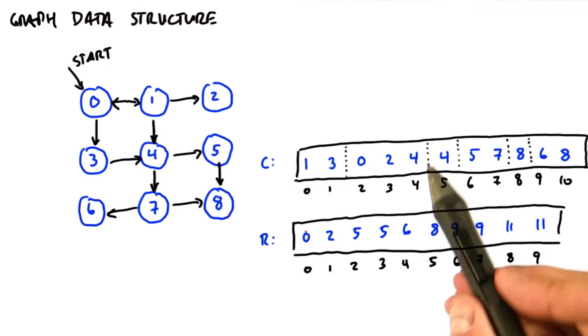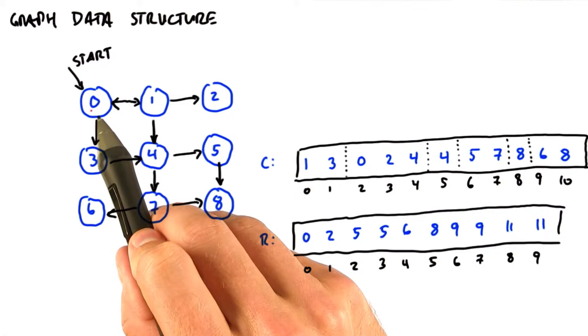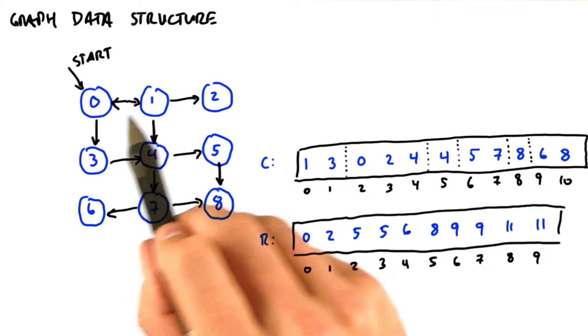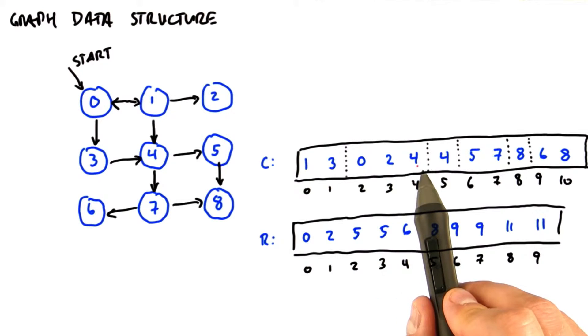We're going to store two arrays to represent the graph. The first, called C, tells us the neighbors for each node. Node 0 has neighbors 1 and 3, so we see 1 and 3. Node 1 has neighbors 0, 2, and 4, and so on.